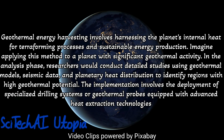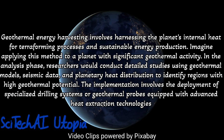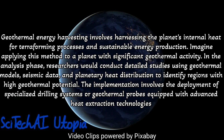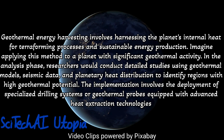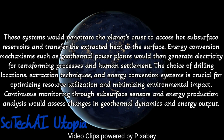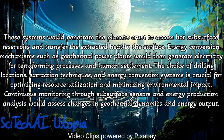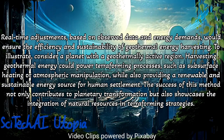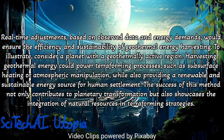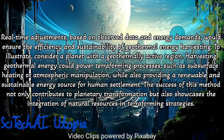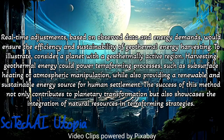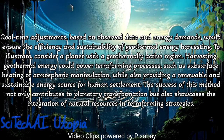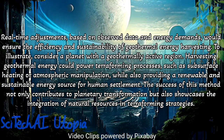Method 29: Geothermal Energy Harvesting. Conduct a comprehensive analysis of the target planet's geothermal activity, identifying regions with high thermal gradients, heat reservoirs, and potential for sustainable energy extraction. Design geothermal energy harvesting systems, potentially involving drilling technologies to access subsurface heat and convert it into usable energy. Implement heat exchange mechanisms and power generation technologies capable of efficiently converting geothermal energy into electricity or other usable forms. Consider environmental impact assessments to minimize disturbances to the planetary subsurface and prevent unintended consequences such as seismic activity or changes in thermal gradients. Establish continuous monitoring systems to assess performance and ensure sustainable implementation.